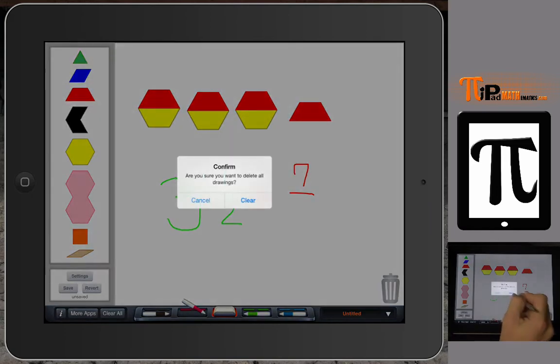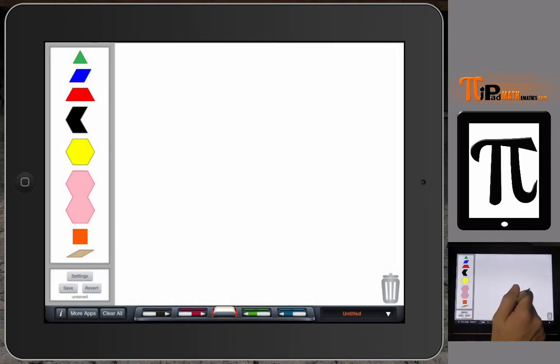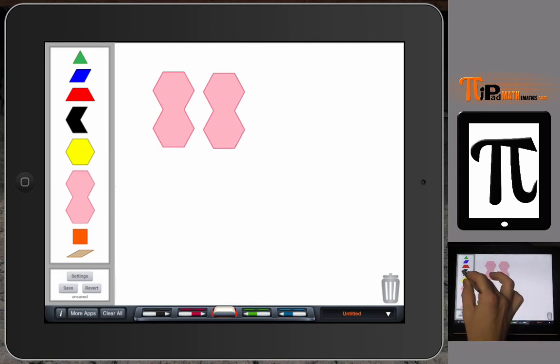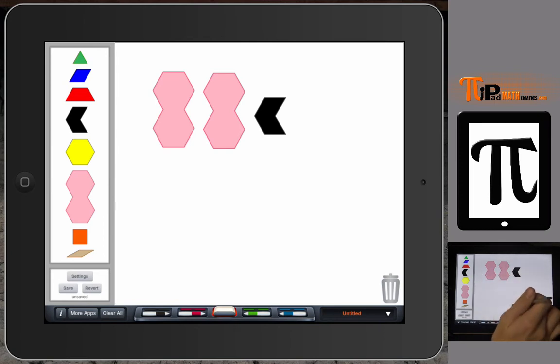Now we can do another model. I'll clear that out and clear this all out here. And we do another model. If this is our whole, then I want to figure out what this shape is or what value does this model have.